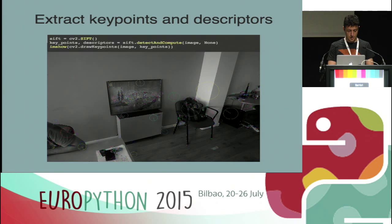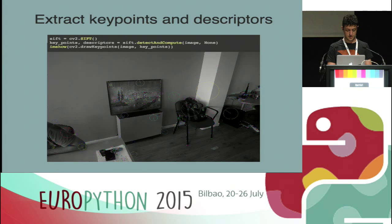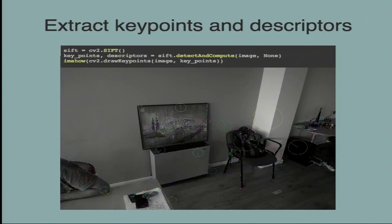We instantiate the SIFT algorithm. Every image recognition algorithm in OpenCV has a function called detect and compute, which returns key points and descriptors. This function may have parameters for image recognition that can be optimized for the specific case.